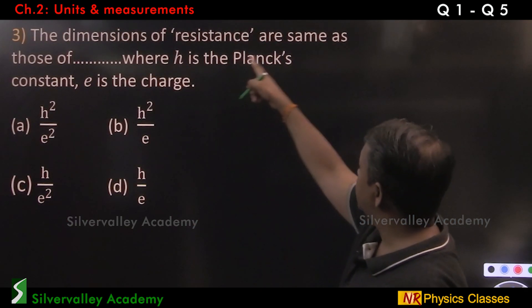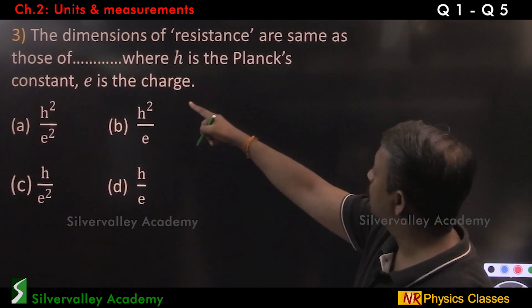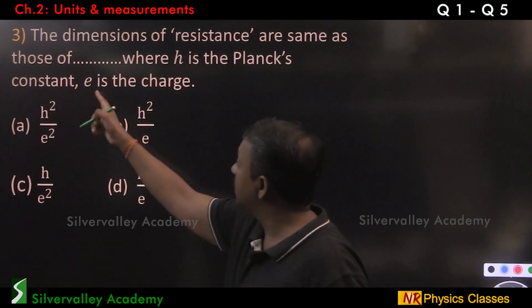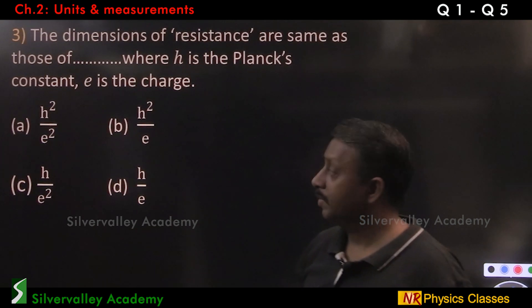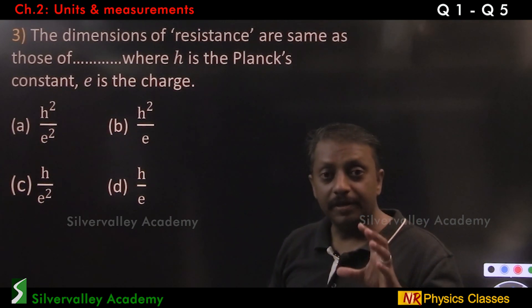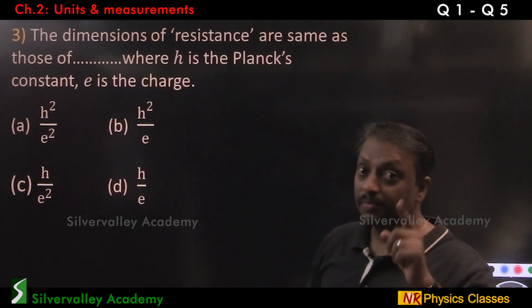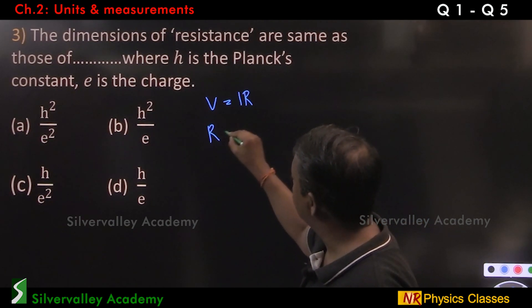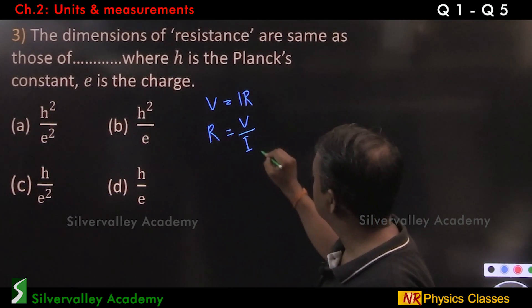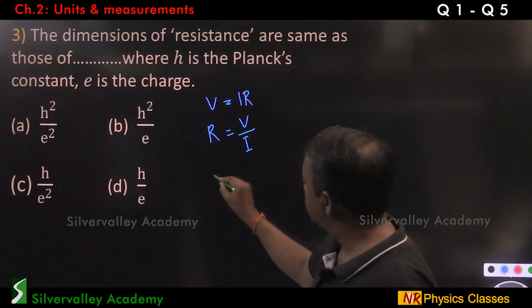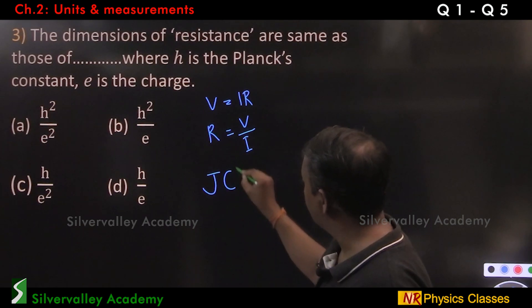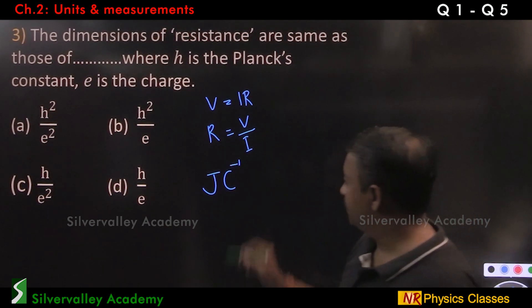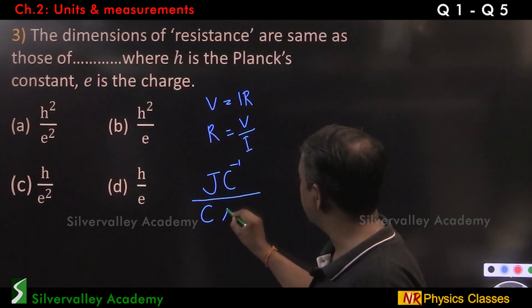The dimensions of resistance are same as those of dash, where H is Planck's constant and E is the charge. Now, consider equation with resistance. The simplest equation is Ohm's law. V equal to IR. So, R equal to V by I. V is Joule per Coulomb. Work done per unit charge. And current is Coulomb per second.